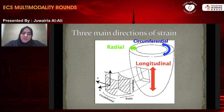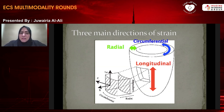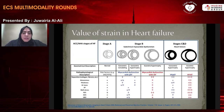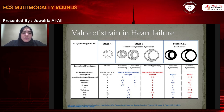Global longitudinal strain has better correlation with different clinical diseases. In stage A heart failure — someone who has only risk factors but no clinical heart failure — global longitudinal strain is already depressed, giving prognostic information that this patient is at risk of developing heart failure. The type of strain involvement also differs: in HFpEF, mainly longitudinal strain is reduced whereas circumferential strain is actually increased and radial strain is mildly reduced. In HFrEF, all types of strain are reduced.